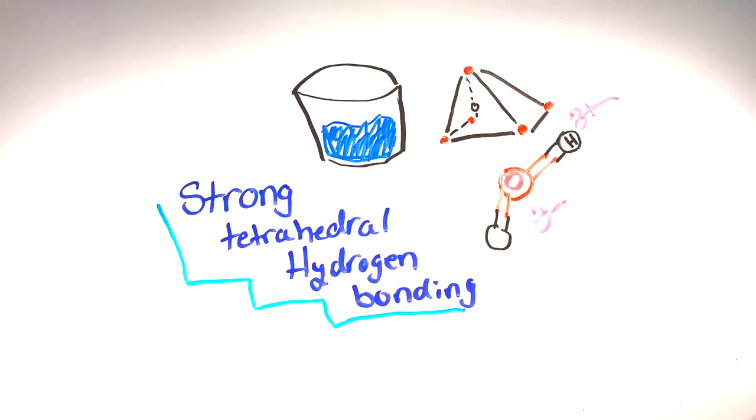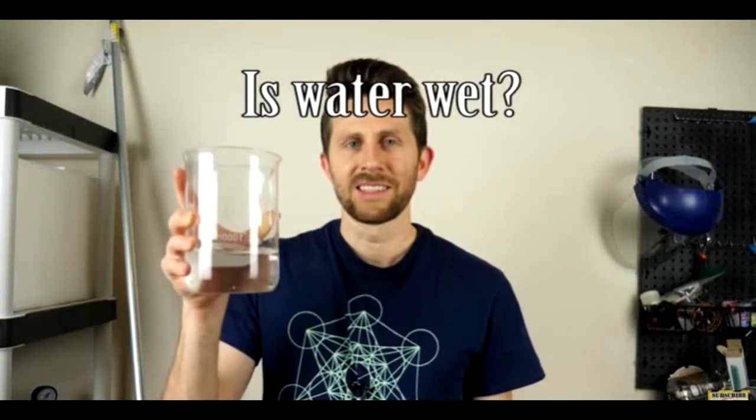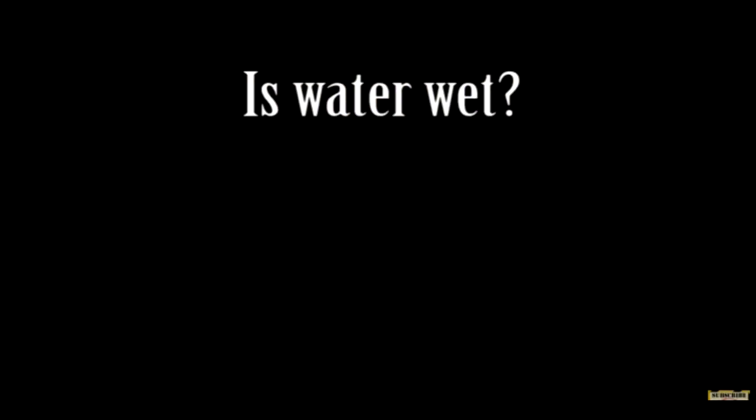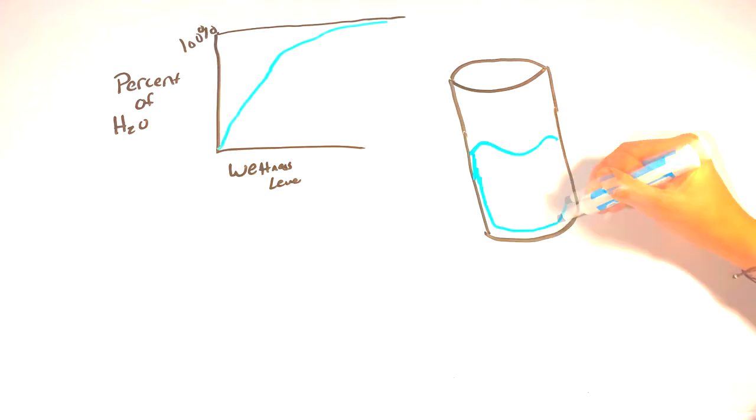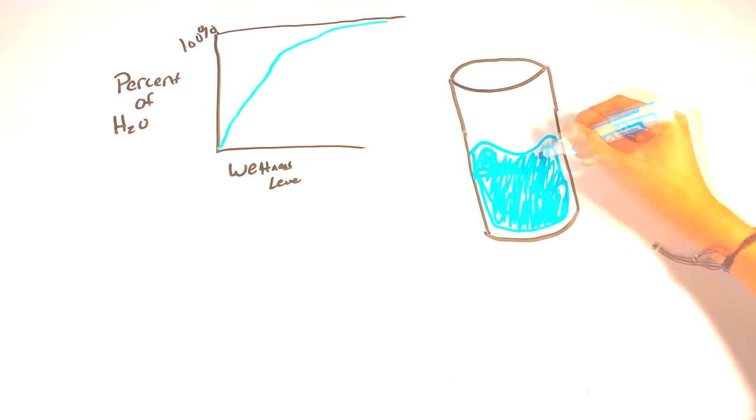To further prove the point, the well-known YouTube channel Action Lab did a full-fledged experiment to prove water's wetness. Based on the chart, water plateaus at about 99% wetness. It would virtually be impossible to create 100% water because there are other chemicals mixed in. Even water from your tap has other ions and minerals in it and even chlorine to help with purification.